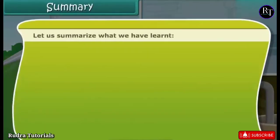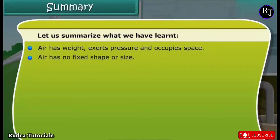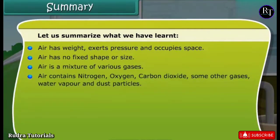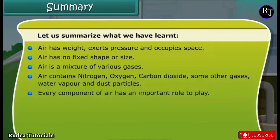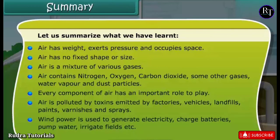Summary: Air has weight, exerts pressure, and occupies space. Air has no fixed shape or size. Air is a mixture of various gases including nitrogen, oxygen, carbon dioxide, noble gases, water vapor, and dust particles. Every component of air has an important role to play. Air is polluted by toxins from factories, vehicles, landfills, paints, varnishes, and sprays. Wind power is used to generate electricity, charge batteries, pump water, and irrigate fields.